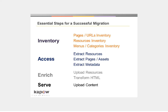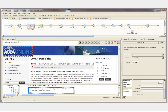Next, we access each item from the inventory database table. The resource files are saved off to the local hard drive, and the HTML is parsed through to extract the content as structured data objects. We then enrich and transform the content as needed before uploading it to the target CMS.